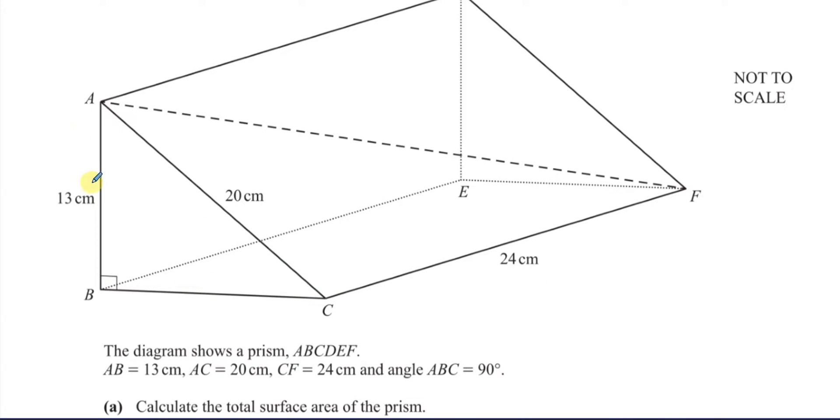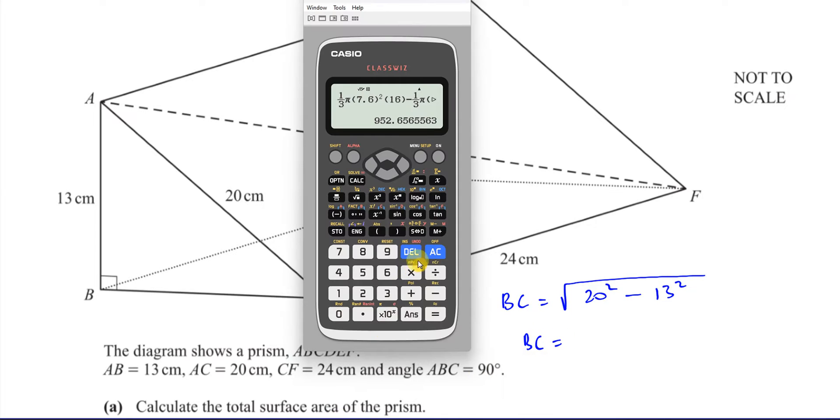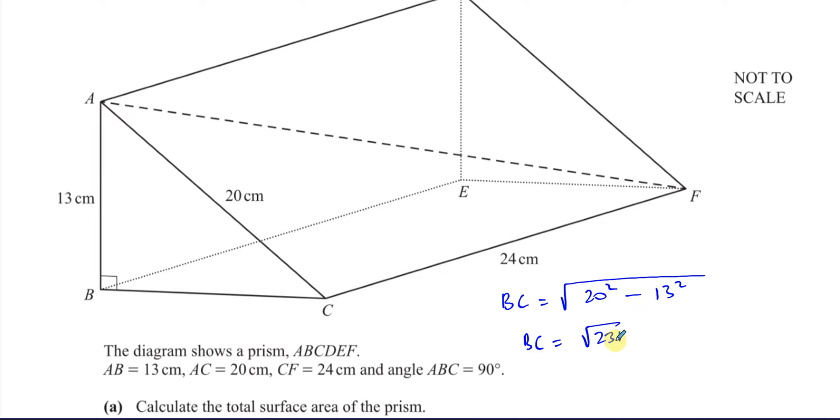Now BC is part of a right-angle triangle. We can use Pythagoras' theorem. We can say BC is equal to the square root of, because we know that Pythagoras' theorem is the sum of the squares of the two shorter sides, gives you the square of the hypotenuse, so we know it's going to be 20 squared minus 13 squared. So the square root of 20 squared minus 13 squared will be the length BC. Now that gives us the square root of 231. So I'm going to leave it like this, because it's not a final answer. I'm not rounding it. I'm going to leave it as the root of 231 centimeters. That is the length BC.